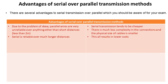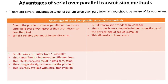Serial transmission also tends to be cheaper, because there is much less complexity in the connections, the physical size of the cables is smaller, and of course this results in lower costs. Parallel wires can also suffer from something called crosstalk, which is interference between the different lines. This interference can result in data corruption. The stronger the signal, the worse the problem becomes, and again this is largely avoided with serial transmission.